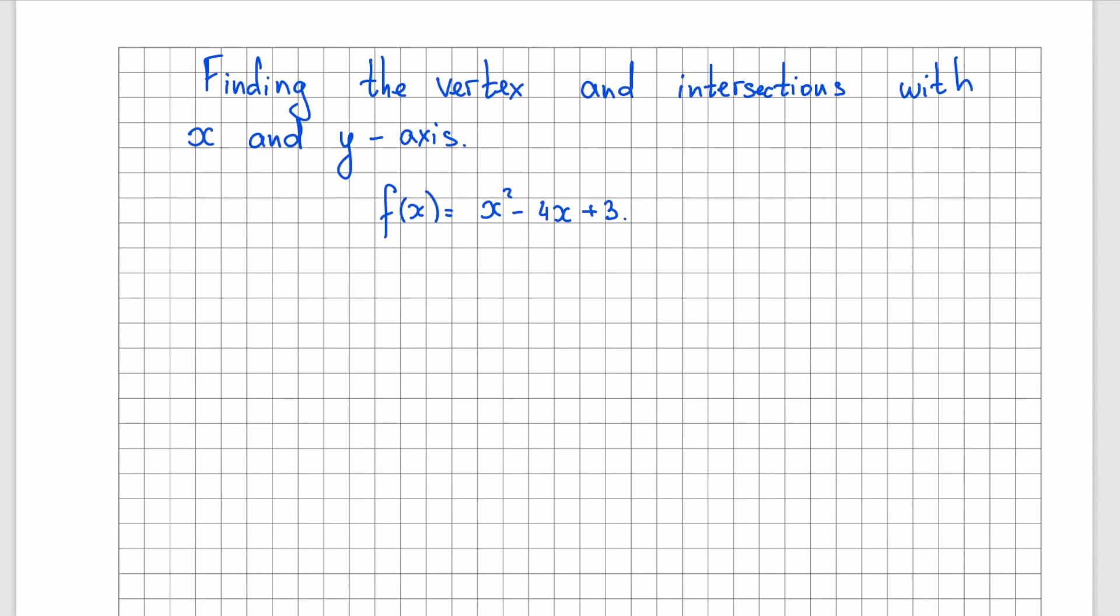Suppose we have a function x squared minus 4x plus 3. We already know how it's going to look like. It will be a u-shape that opens up because the number next to x squared, or a, is positive. But unfortunately we don't know where we intersect x and y-axis and we also don't know the coordinates of the vertex.